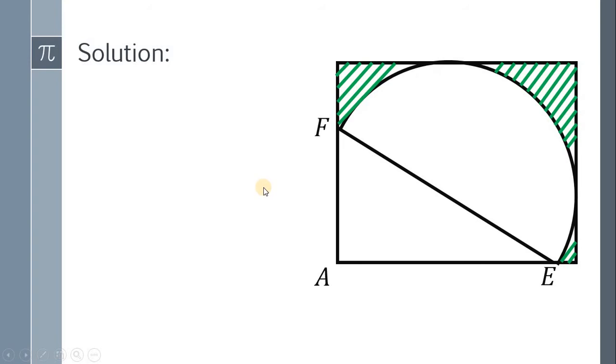First, we need to recall that AF is equal to 12 units and AE is equal to 16 units. To find the area of this green shaded region, we need to find first the area of the whole rectangle, then subtract the area of this triangle. Also, we need to subtract the area of this semicircle.